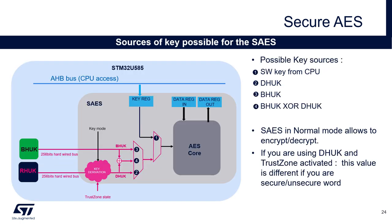Now we can have a complete overview of the possible key sources for the Secure IOS. The first possible key source is a key coming from the embedded software. The second possible source is the derived HU key (DHUK), which results from a derivation of the root hardware unique key. The third possibility is the boot hardware unique key (BHUK) described earlier. And finally, the fourth one is an XOR between the BHUK and the DHUK.